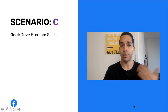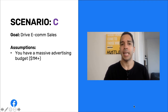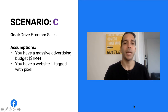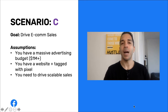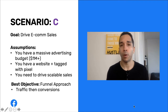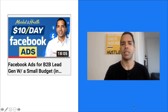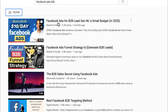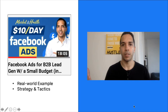Scenario C: you want to sell a product or service online, and you have a massive budget — over a million dollars, whether it's two million, five million, or ten million. You have your own website tagged with the pixel. In this situation, you might need to drive scale, and running a conversion campaign alone might not work. You might need a full funnel approach — running a traffic campaign, then a conversion campaign. I have an 18-minute video called 'Facebook Ads for B2B Lead Generation' that explains the process of how to approach things from a multi-funnel perspective, and I'll link to it in the description.